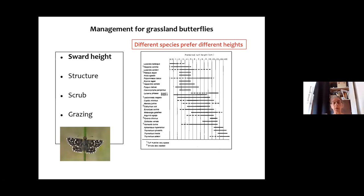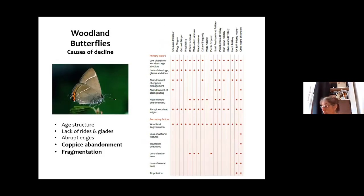It's also about the structure of the grassland — they need a tussocky habitat with some short and some long areas and scrub for shelter. Grazing is usually the best management because it's gradual and creates that tussocky structure. For woodland butterflies, some opening up of woodlands is required — they're species of woodland edges, rides, and gaps, not deep woodland. With abandonment of coppicing and traditional management, and fragmentation of woodlands, they are also really struggling.